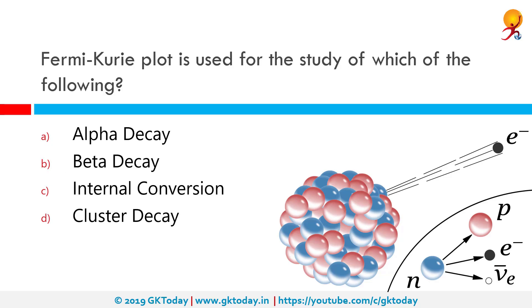The Fermi–Kurie plot is used for the study of which of the following? It's used for beta decay. Beta decay is a process that unstable atoms can use to become more stable. There are two types — beta minus and beta plus. During beta minus decay, a neutron in an atom's nucleus turns into a proton, an electron, and an antineutrino.